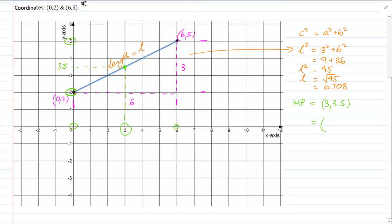So the midpoint would be equal to 6 plus 0 over 2. The average is always calculated by adding and dividing by how many you have. And then 2 plus 5 over 2. And if you look at these calculations, you'll get 3, 3.5, closed brackets. So there's your midpoint and length.